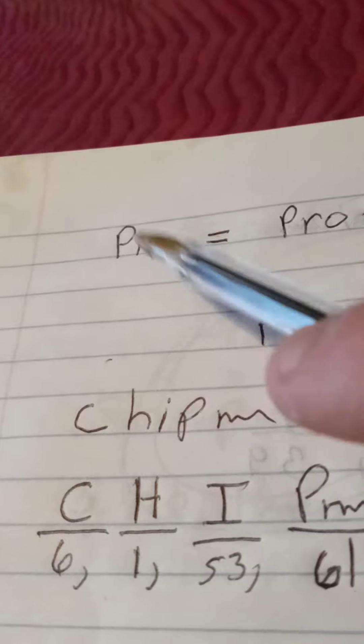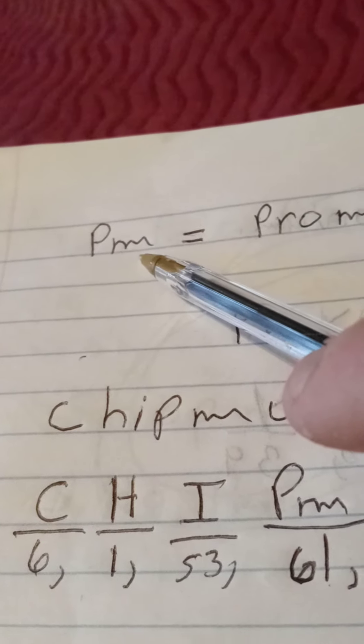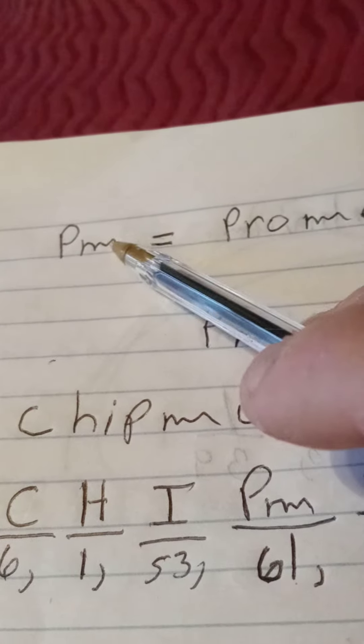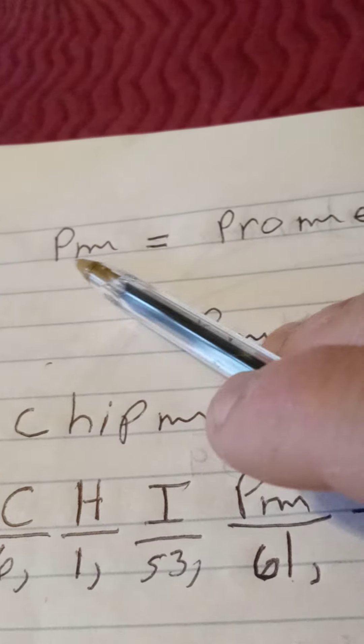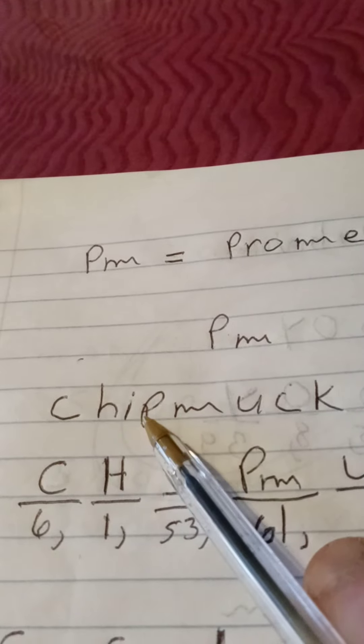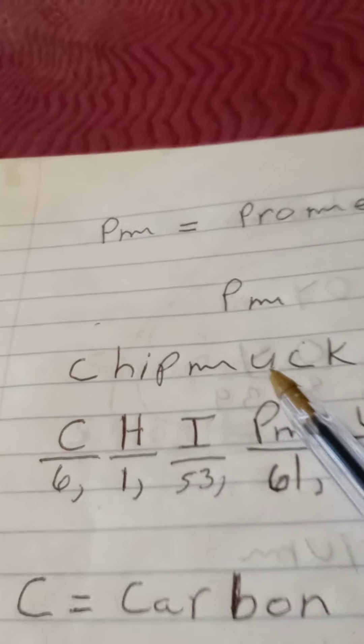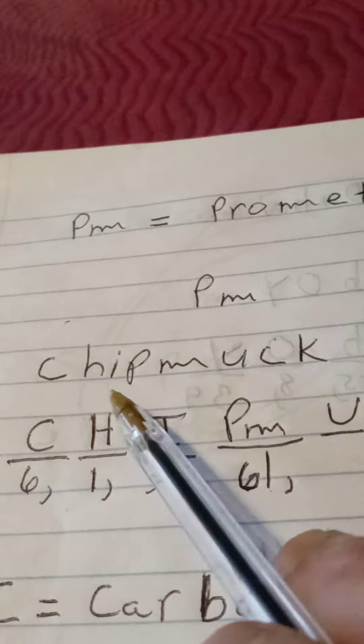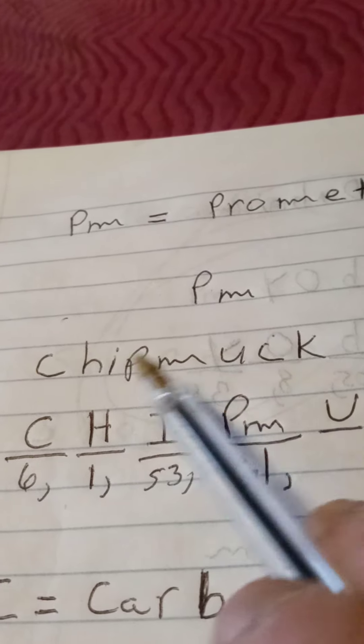A word that has PM in it together, you see the P before the M. You'll get the word chipmunk: C-H-I-P-M-U-C-K. See the P before the M? The P comes before the M right here.